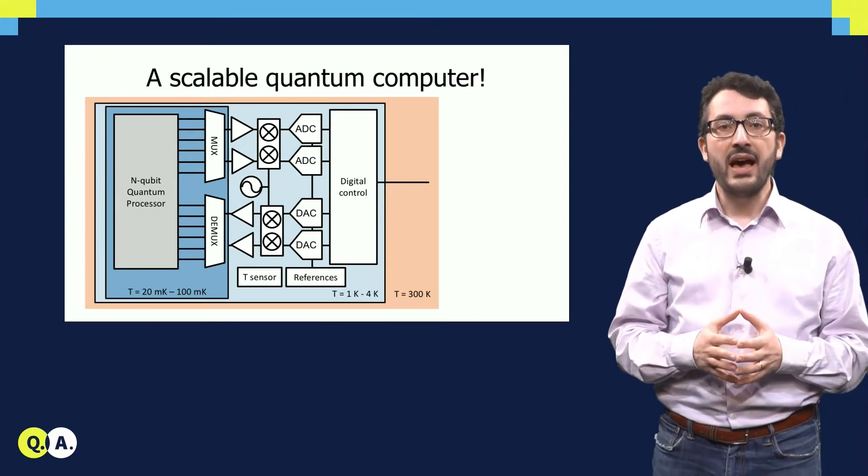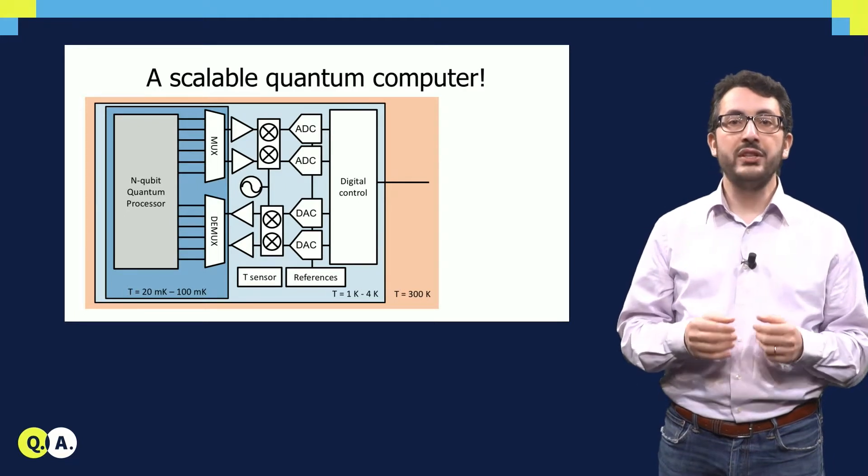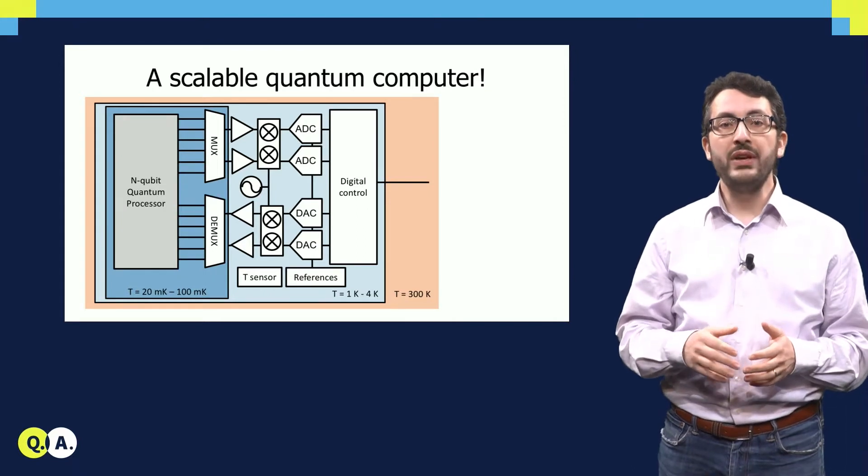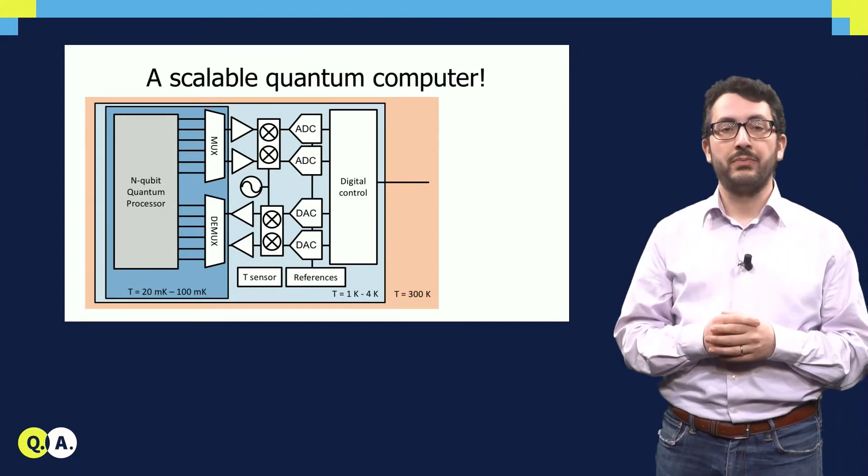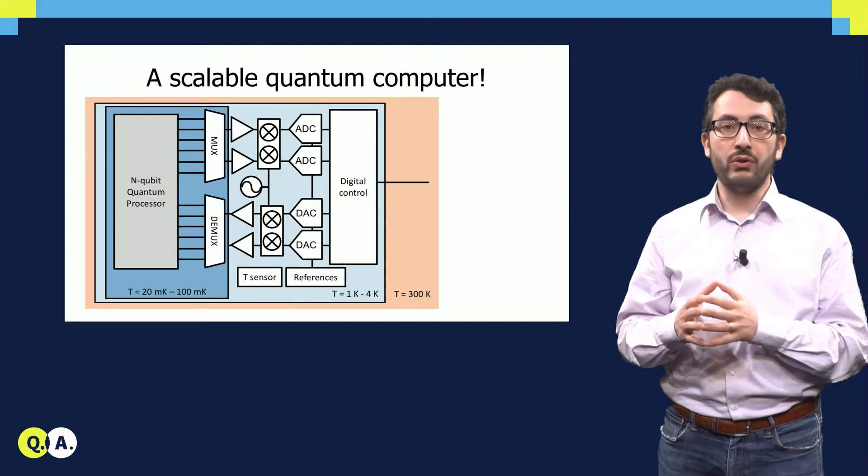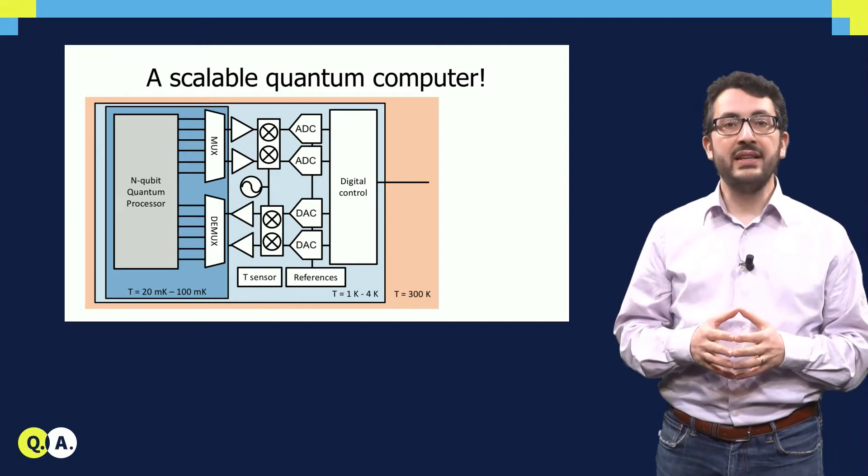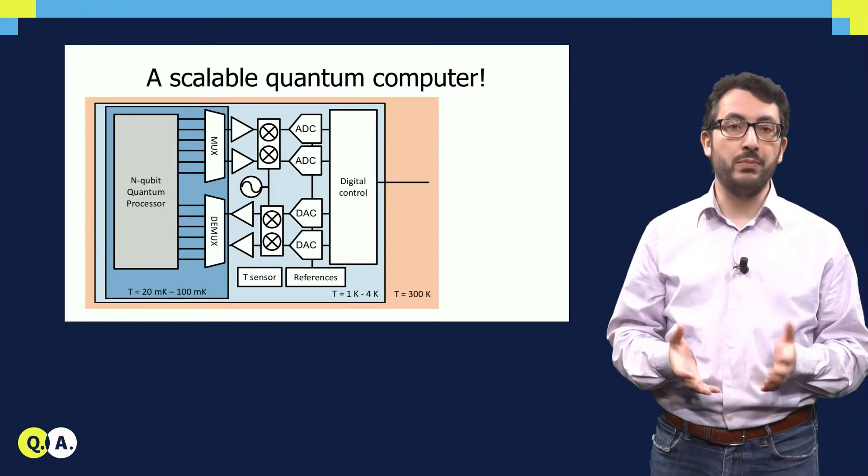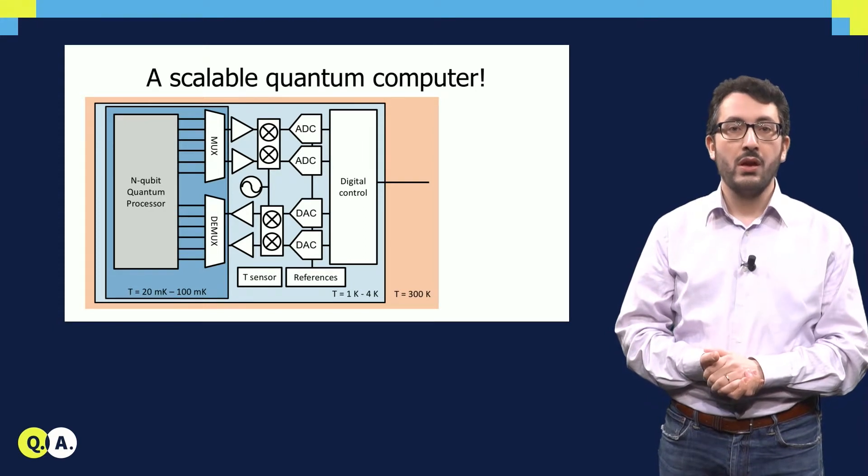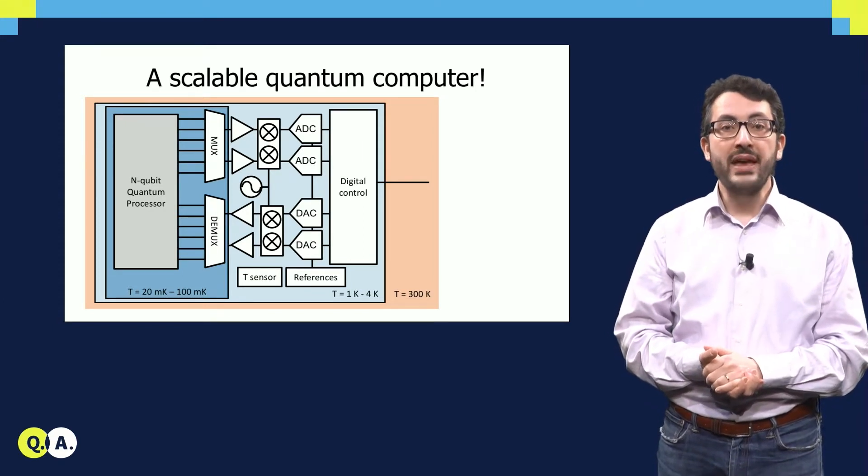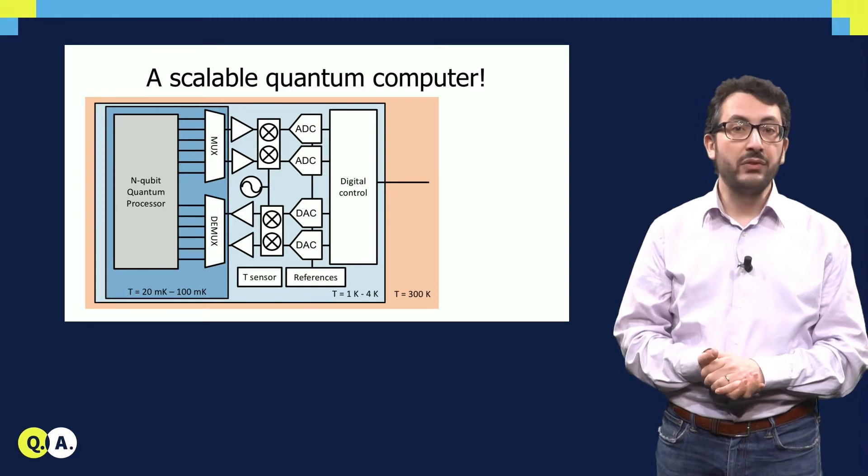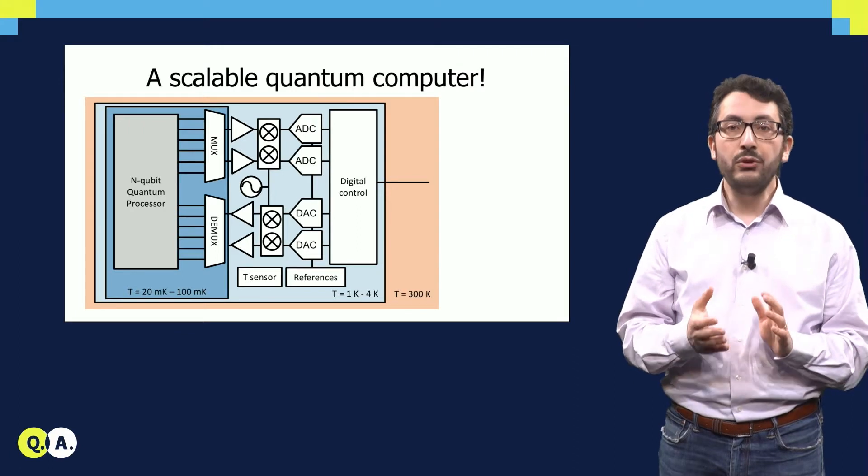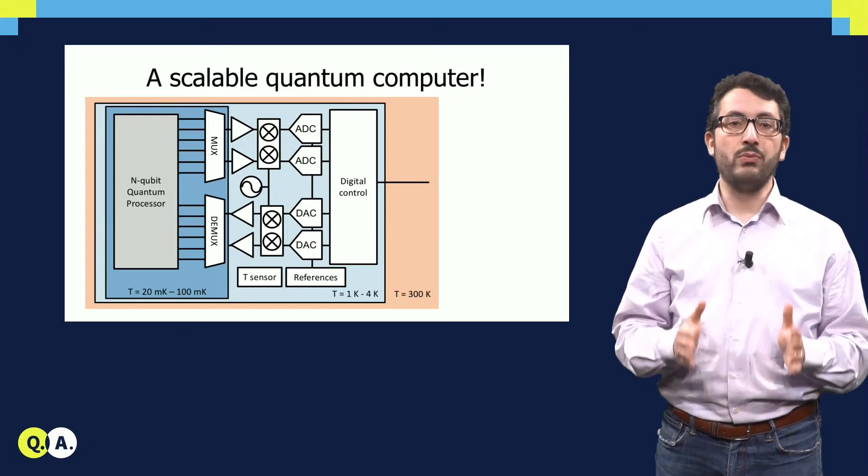These digital signals are processed by the digital control unit, which determines what to do with these read out states and decides what to feed back into the quantum processor. That's done with the digital to analog converters, which brings back the signal to the analog domain, eventually upconverting and amplifying it back into the quantum processor. One thing you may realize is that we may also need to bring some part of the electronics at the same temperature of the qubits, so down to 20 mK. But if we can do that, we can really build a scalable quantum computer.